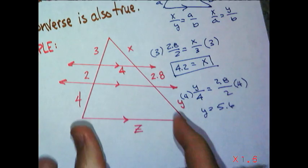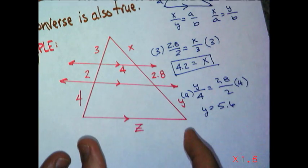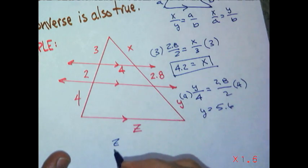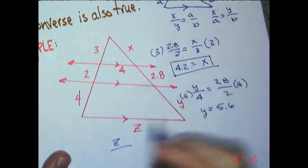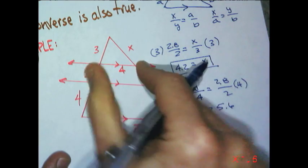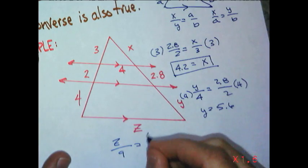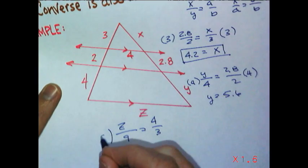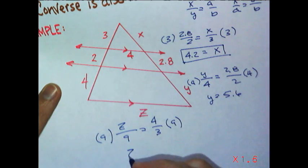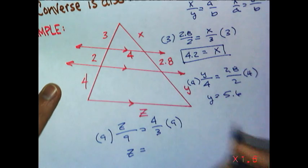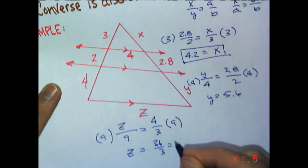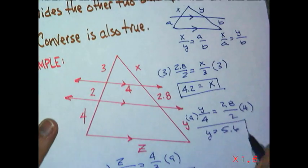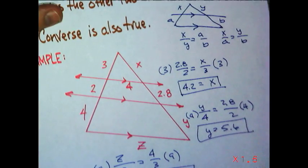So what we're going to do, or maybe I'll do it, we'll put the variable in the front. Z compared to this whole side. 4, 6, 7, 8, 9. 4, 2, 3. Multiply by 9. Giving me 36 over 3, which is 12. I have all my missing values now.